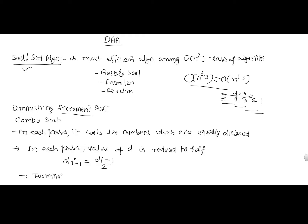The termination condition is when d equals 1. Note that when d is first equal to 1, we still run the algorithm for that pass. After that pass completes, we then terminate. So we must run the algorithm once for d equal to 1, and then terminate the next time.